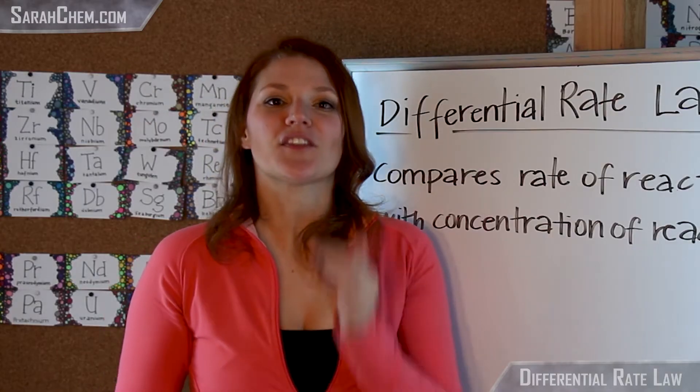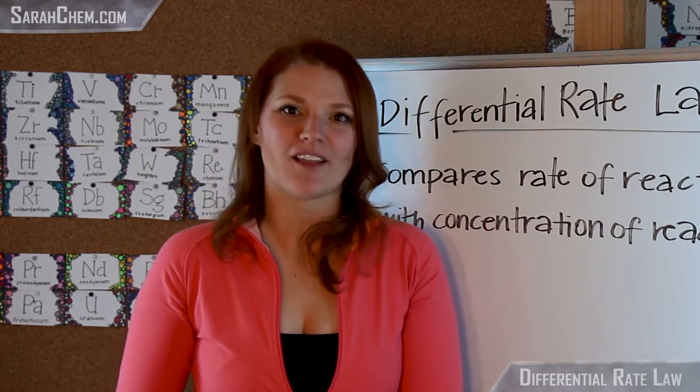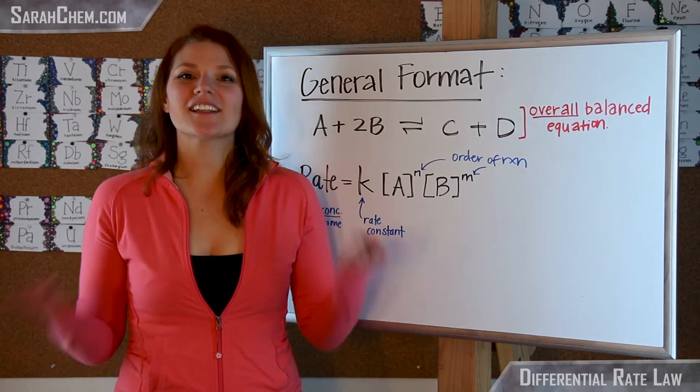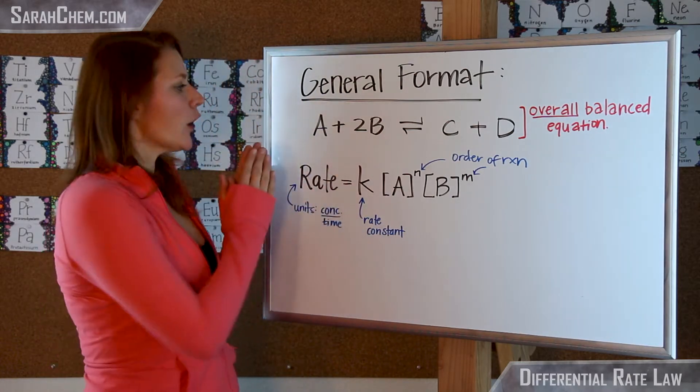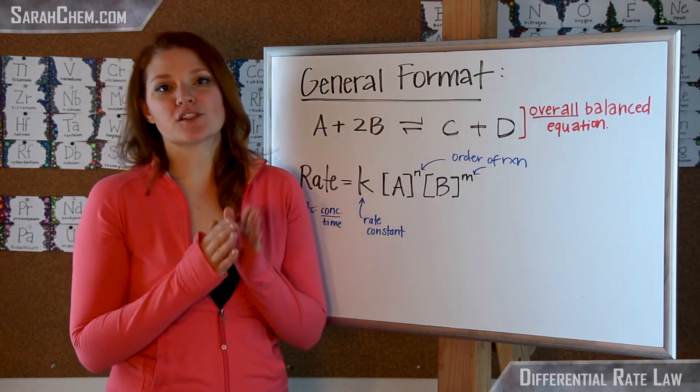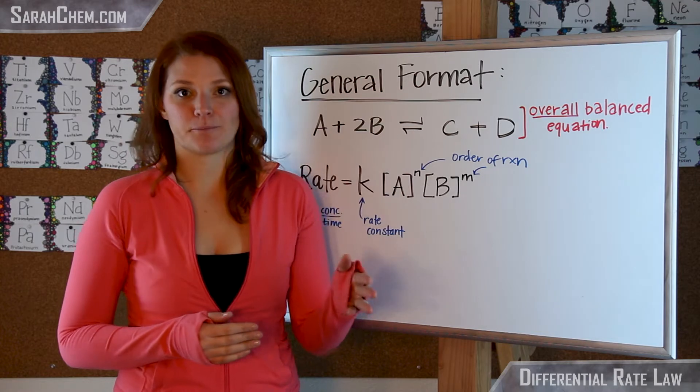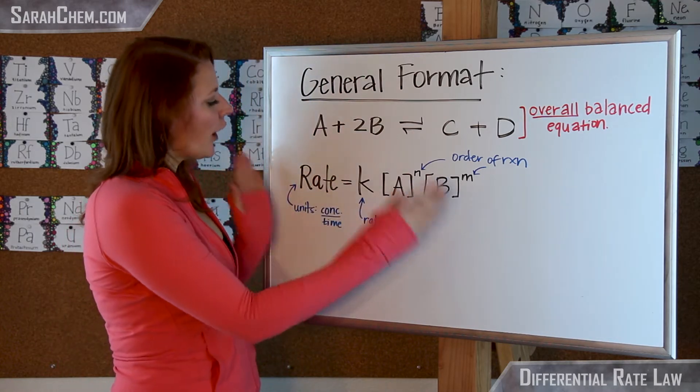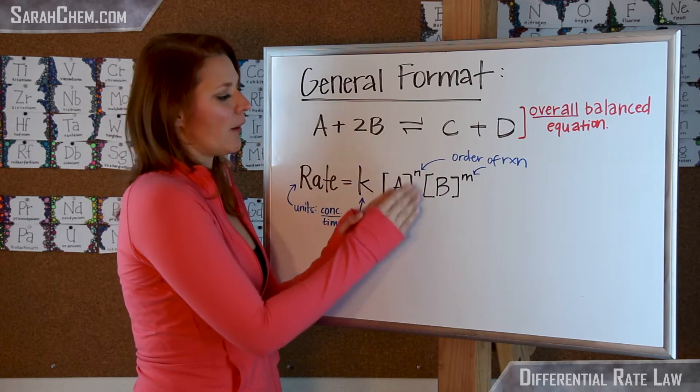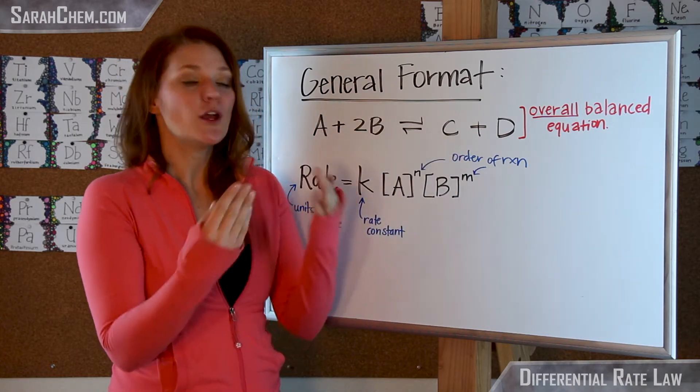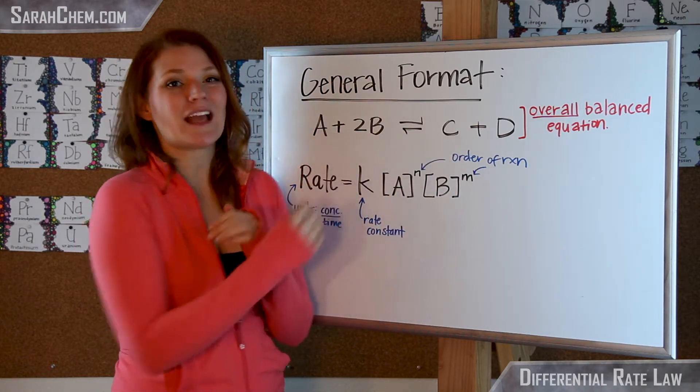So let's go ahead and take a look at the general format of the differential rate law. Let's say that the overall balanced reaction is A plus 2B goes to C plus D. Now the generic version of the rate law would be that the rate is equal to k times A raised to some power times B raised to some power, noting that A and B represent the reactants that we have.